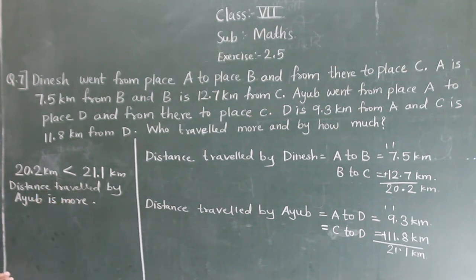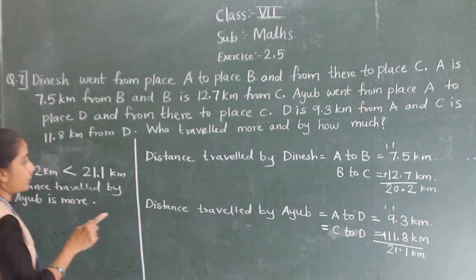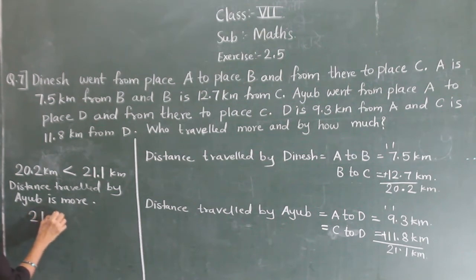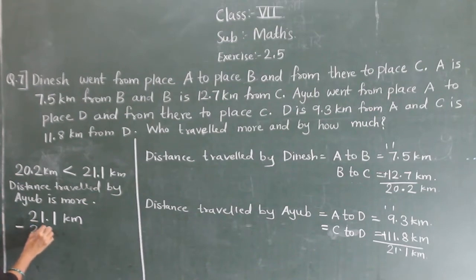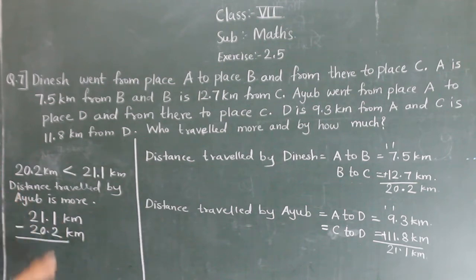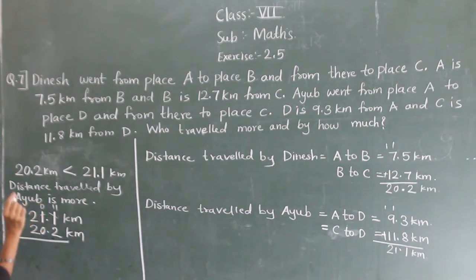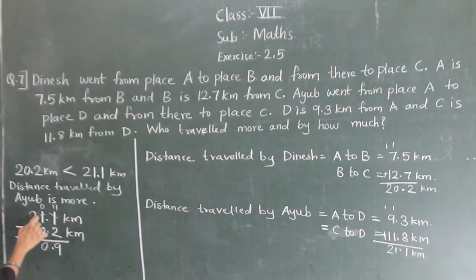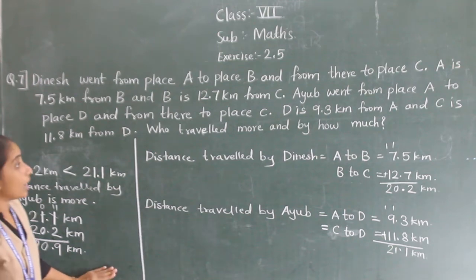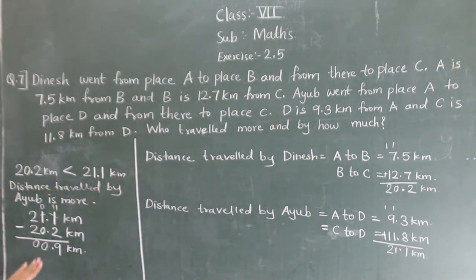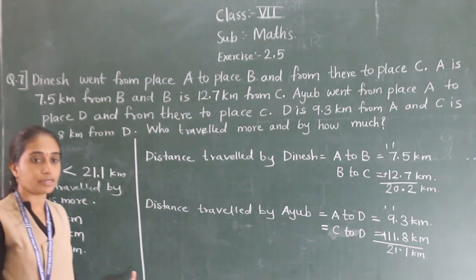So to find by how much, we need to subtract. 21.1 km minus 20.2 km. 1 minus 2 is not possible, so we borrow: 11 minus 2 is 9, 0 minus 0 is 0. So the answer is 0.9 km. Aiyu traveled more by 0.9 km.